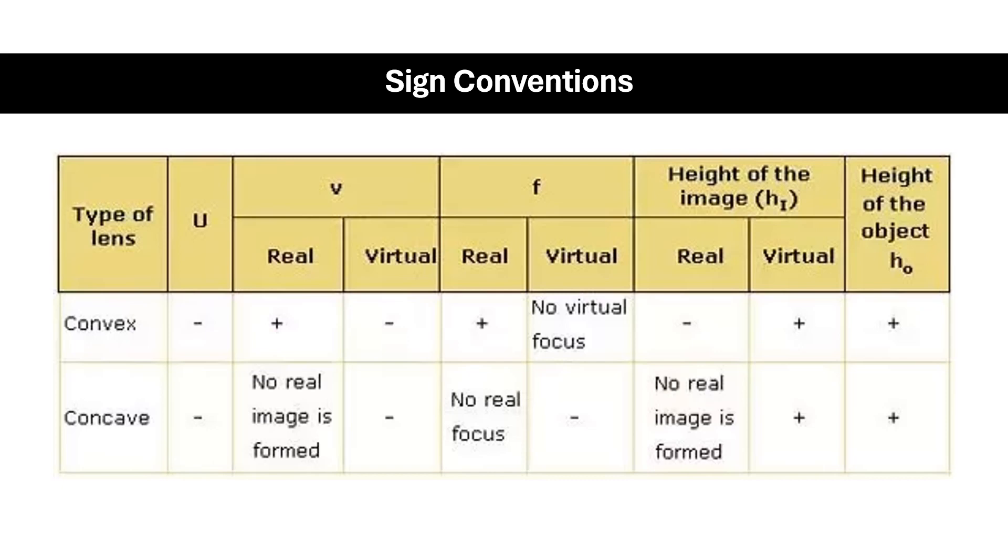So u pertains to the object, v is the image, f is still the focal length, and there are much more complicated problems involving height of the image. For v, f, and height of the image, there can be real or virtual descriptions depending on what was written on a specific problem. Sign conventions are very important because it helps us maintain consistency throughout the problem solving activities.